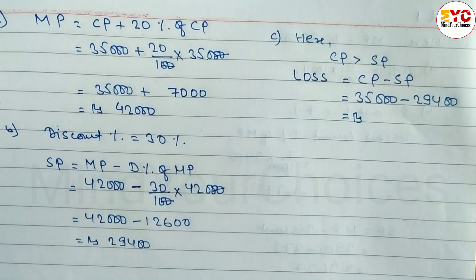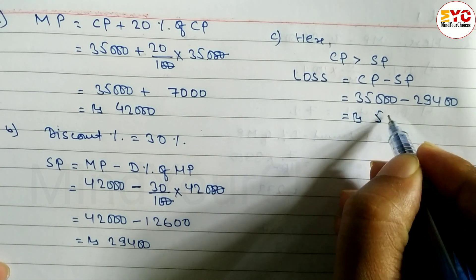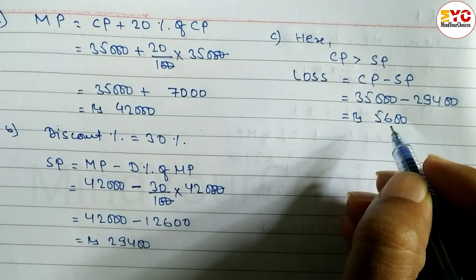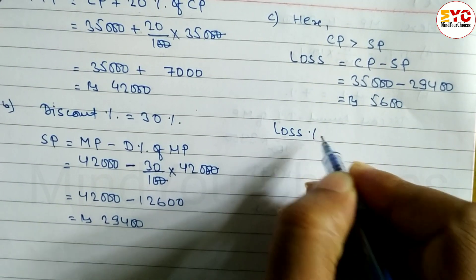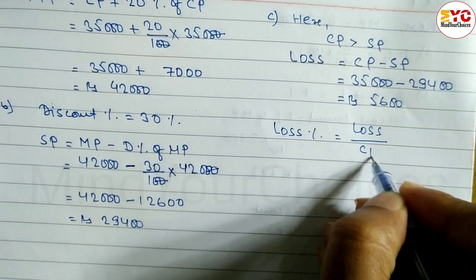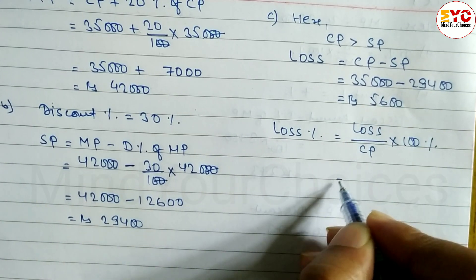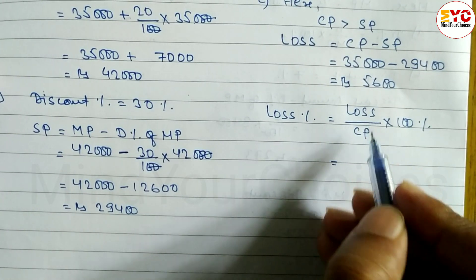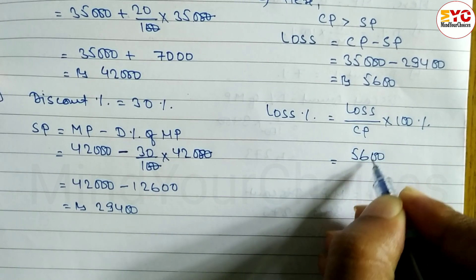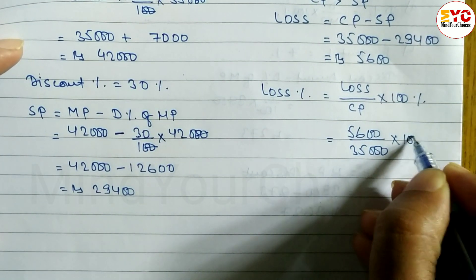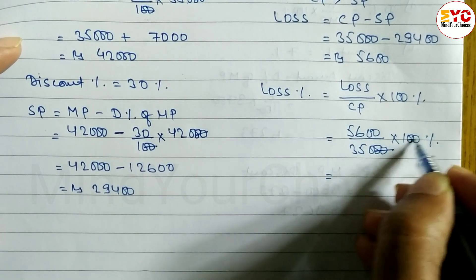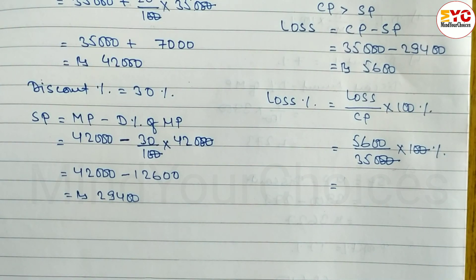Loss = 35,000 minus 29,400 = 5,600. So Roshni has a loss of 5,600. Now we find loss percentage. Loss percentage formula: Loss% = (Loss / CP) × 100. Loss = 5,600, CP = 35,000. So: (5,600 / 35,000) × 100. Cancelling zeros: 5,600 / 350.